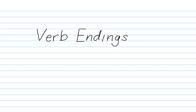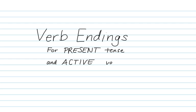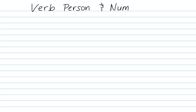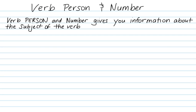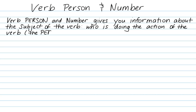This video is an overview of verb endings for the present tense and the active voice. Verb endings tell you about the person and the number of the subject. Person and number give you information about the subject of the verb — who is doing the action of the verb, which is referred to as the person, and how many there are, which is the number.